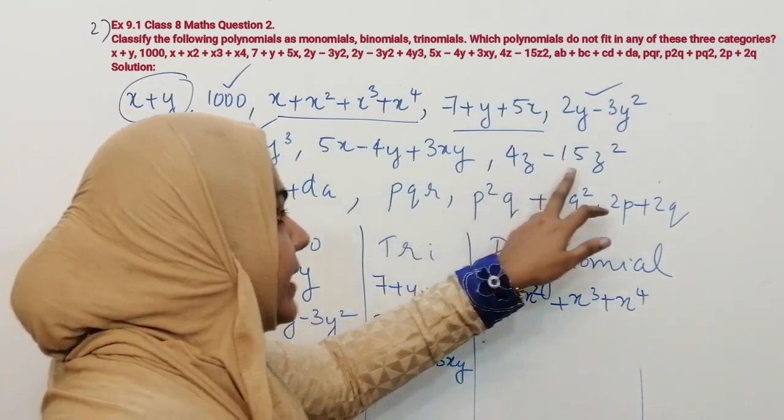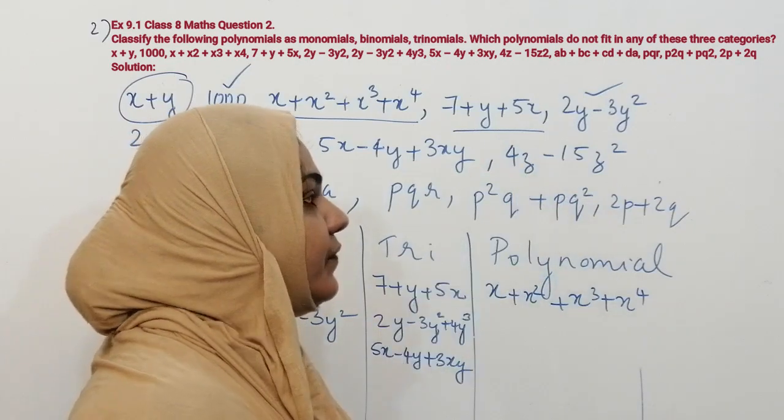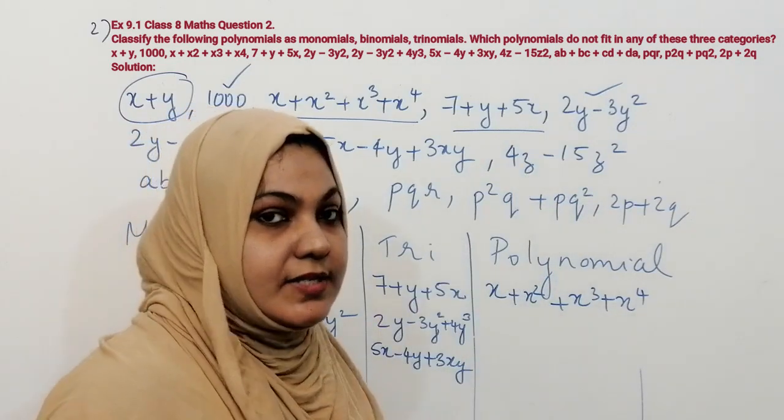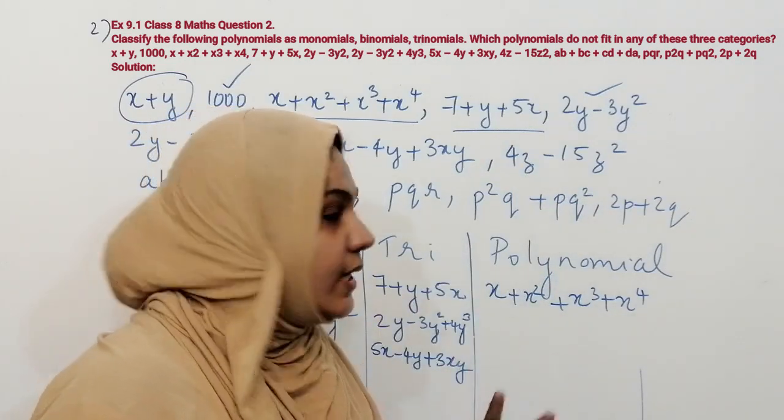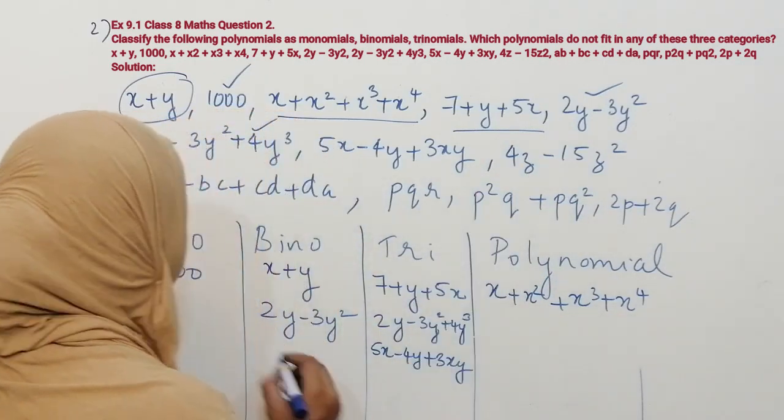The next algebraic expression is 4z minus 15z squared. It has two terms, so it is a binomial.